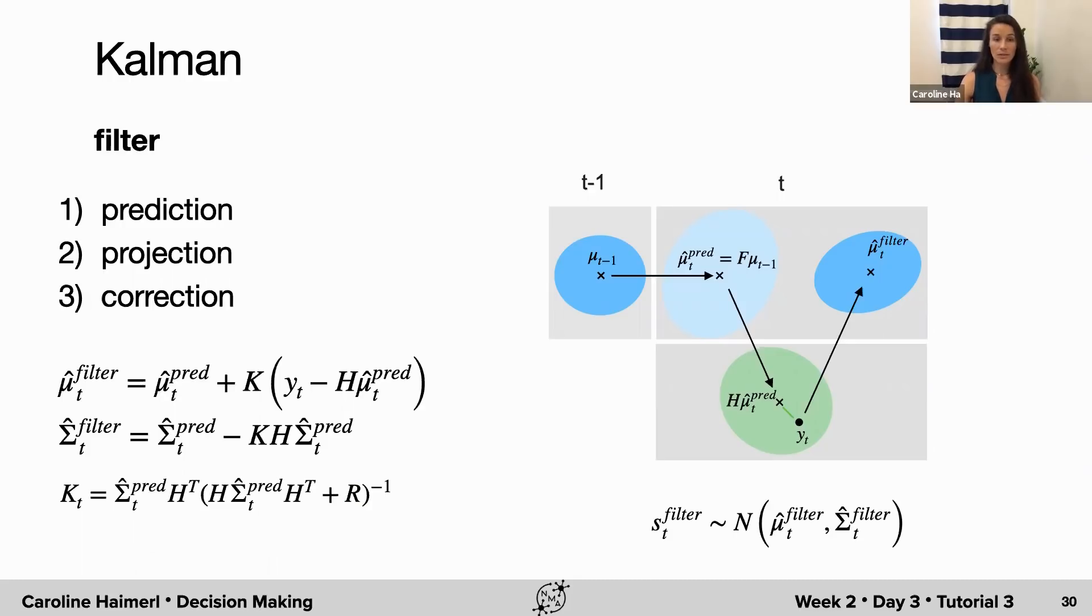With this correction, we arrive at the filter estimate of our latent distribution at time point T. We can now continue propagating our distribution further along in time, step by step. This means that our final Kalman filter estimation of the latent distribution at time point T will be used for the next time step. In different words, the posterior distribution at time point T will be the prior at time point T plus one.